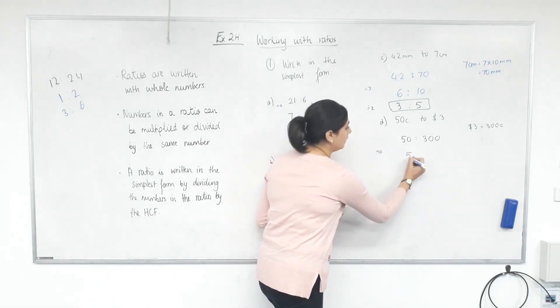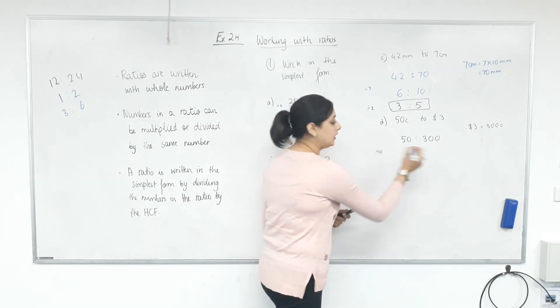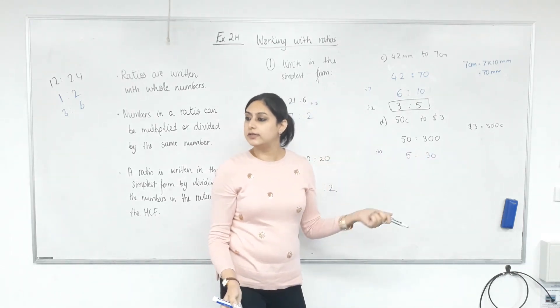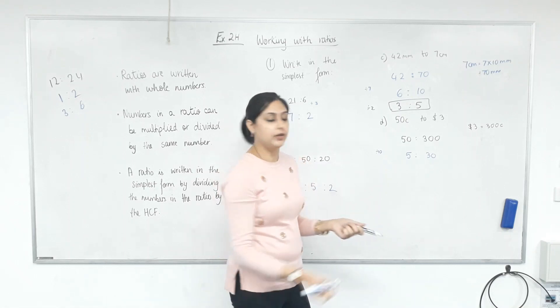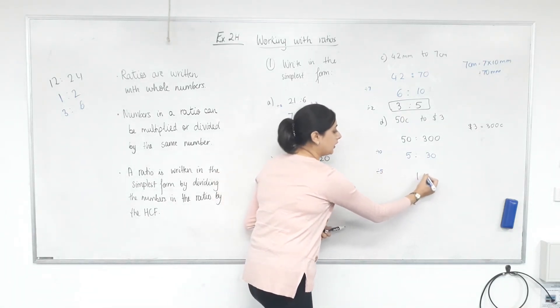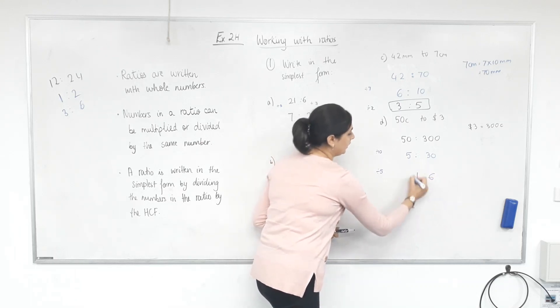50 divided by 10? 5. 300 divided by 10? 30. And we know it's still not fully simplified. So we can divide both by now. 5. 5 divided by 5? 30 divided by 5? 30. That's it.